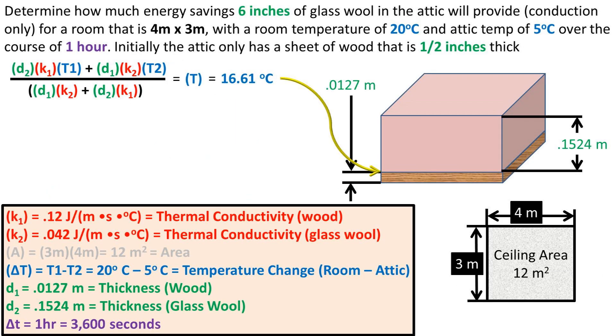Back to the problem. We can use the equation we just found and plug in all of our numbers. We get a temperature between the wood and glass wool of 16.61 degrees Celsius.